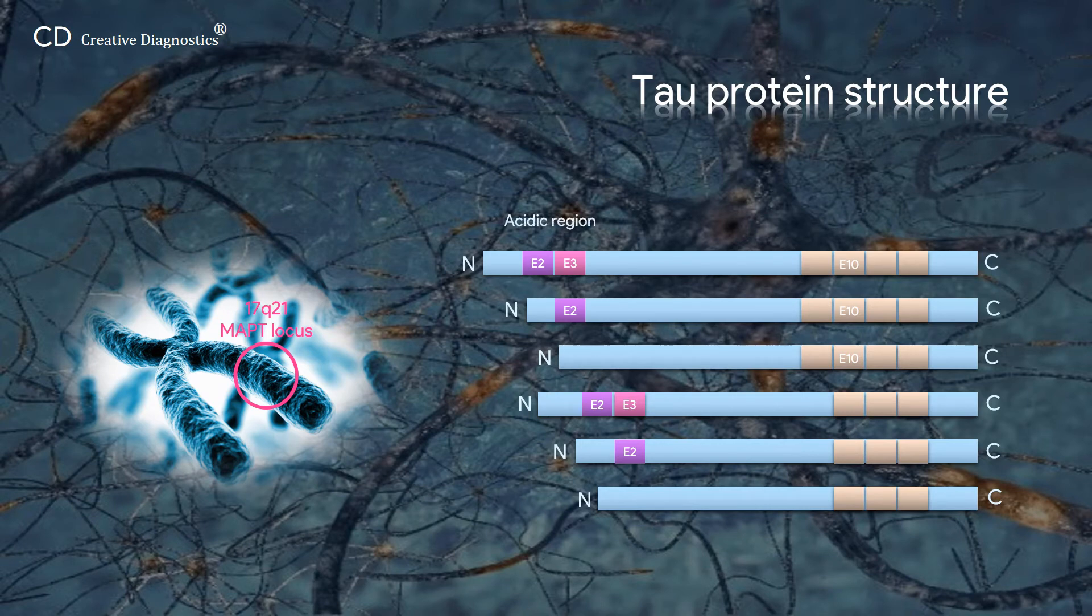The structure of Tau protein is divided into 4 regions: an acidic N-terminal region, a proline-rich region, a microtubule binding domain, and a C-terminal region.